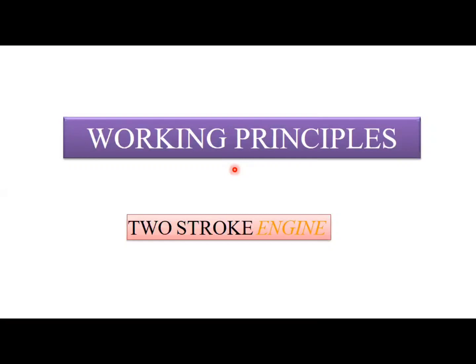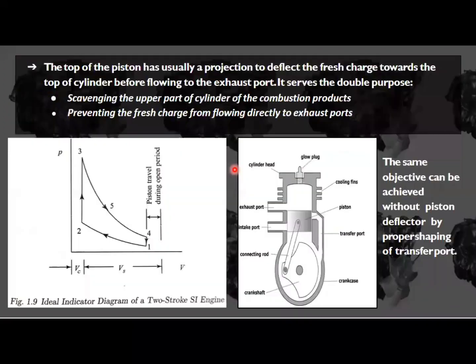During the expansion stroke, whatever residual gases remain after combustion — after pushing the piston downwards — must leave the cylinder to the atmosphere. So during the expansion stroke, the exhaust also takes place. In a two-stroke engine, there is an intake port, an exhaust port, and a transfer port. The opening and closing of these ports depends on the piston travel; as the piston uncovers the exhaust port, it also uncovers the intake port.